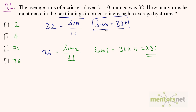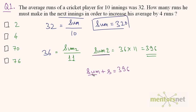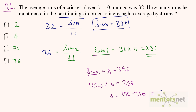We have the sum of the first 10 innings as 320 runs and the sum of the first 11 innings as 396. The sum for 11 innings equals the sum for 10 innings plus the runs scored in the 11th inning. So 320 plus S equals 396, where S is the runs scored in the 11th innings. Therefore, S equals 396 minus 320, which is 76.